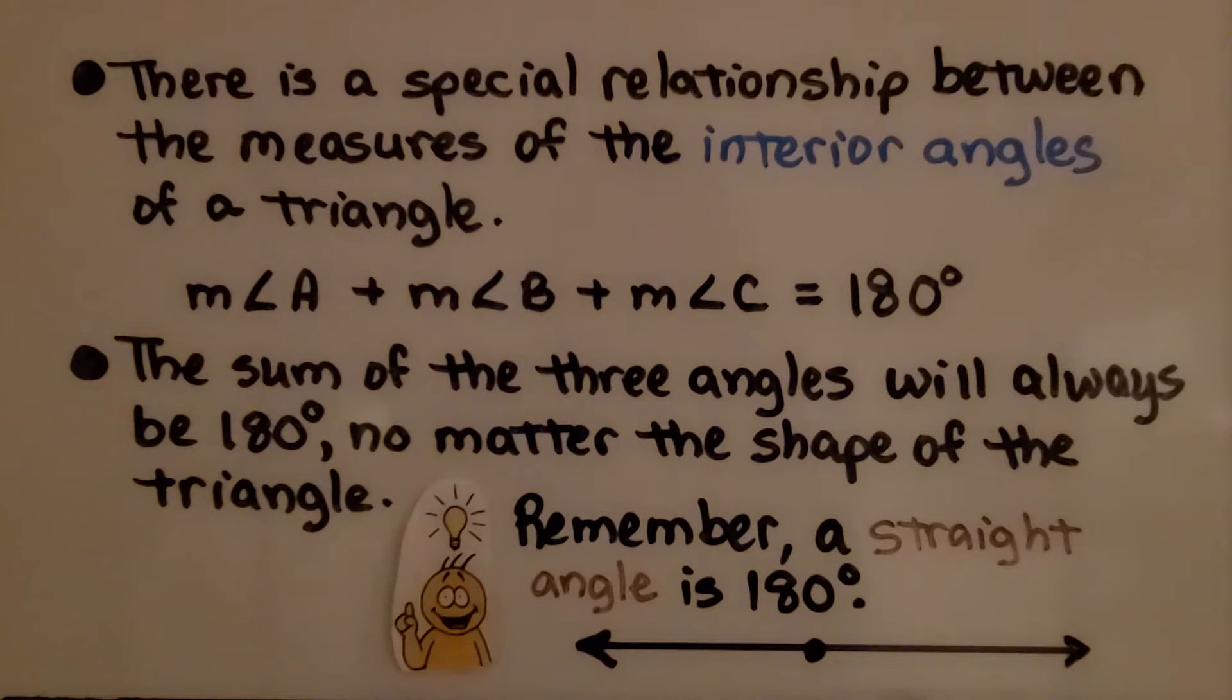There's a special relationship between the measures of the interior angles of a triangle. The measure of angle A plus the measure of angle B plus the measure of angle C is equal to 180 degrees.